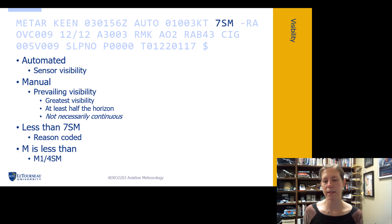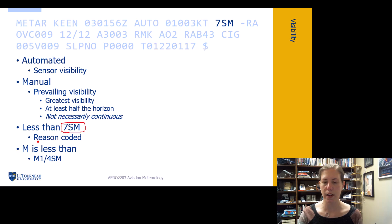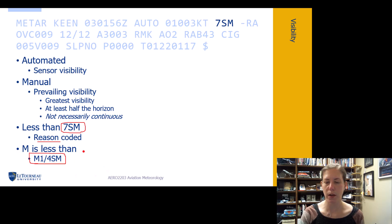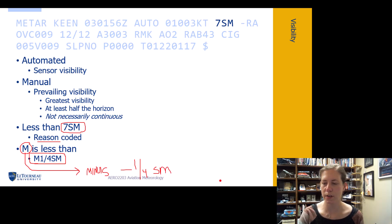If the visibility is less than seven statute miles — visibility on METARs is reported in statute miles — they're going to include a reason code when it's reported below seven miles. Sometimes you might see M1/4SM, meaning the visibility is less than one quarter statute mile. M reminds me of minus, so minus one-quarter statute mile. We might also see M3/8SM, meaning visibility is less than three-eighths of a statute mile.